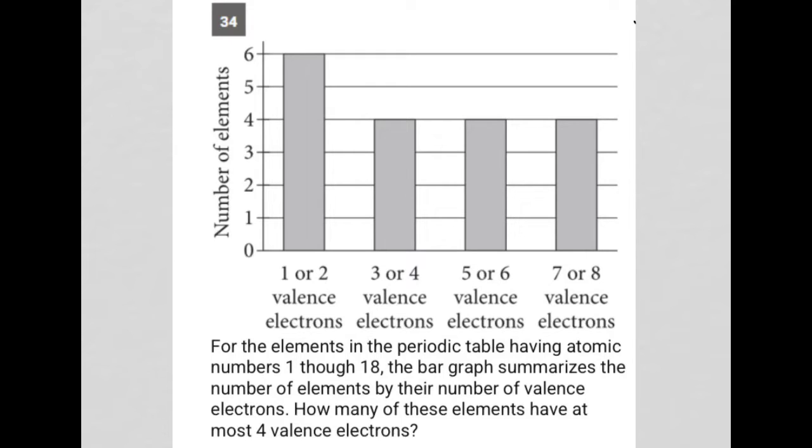This question is a diagram question. We have this table provided here. The x-axis has one or two valence electrons, three or four, five or six, seven or eight. The y-axis is number of elements.